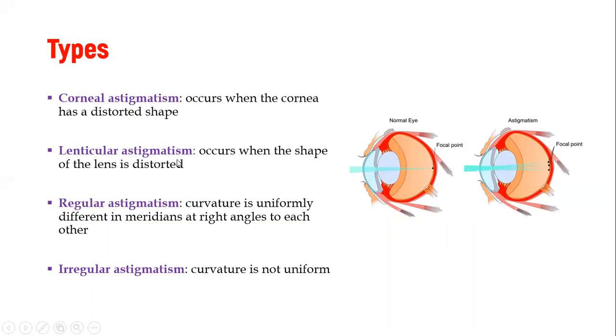The other type we have is lenticular astigmatism. Now this is the problem with the curvature of the lens. So sometimes the lens itself might not have the very good curvature it's supposed to have for bending of light. Therefore, if it is a bit asymmetrical or it is not curved in the right way, we find that we form a distorted image because of the different focal points.